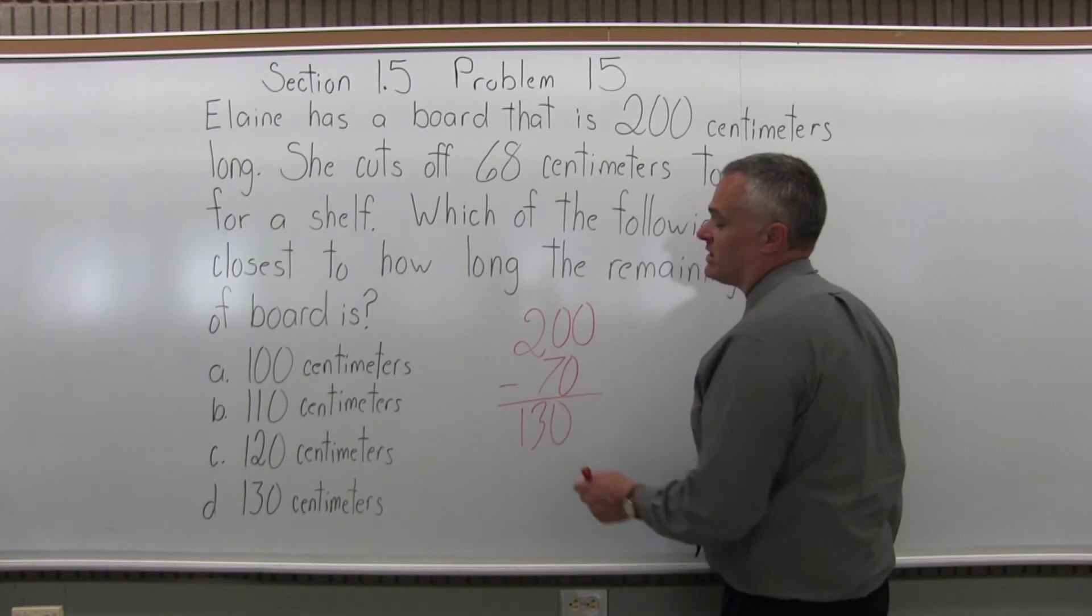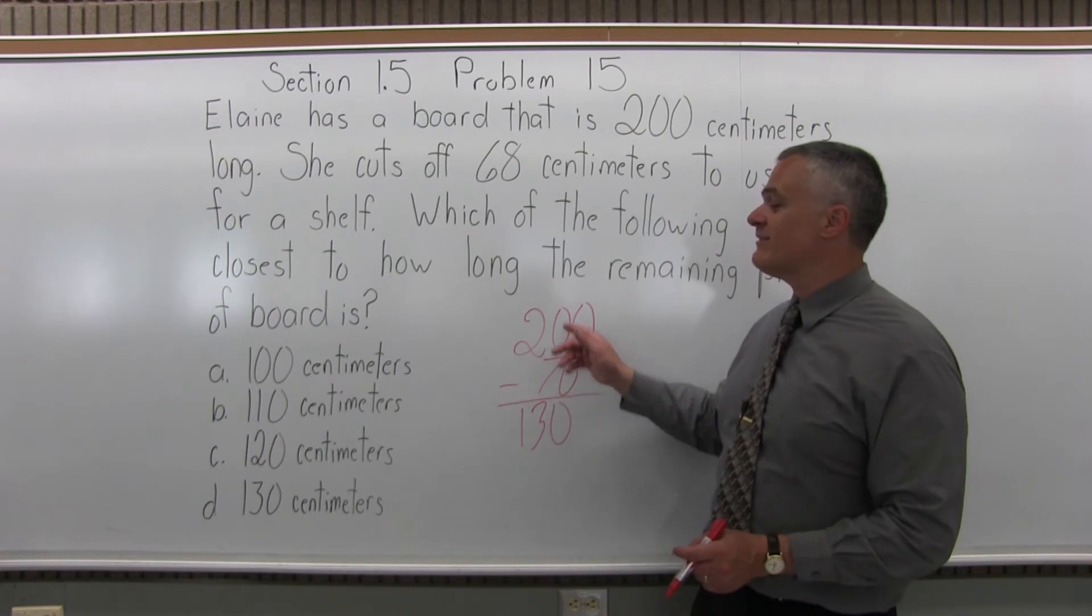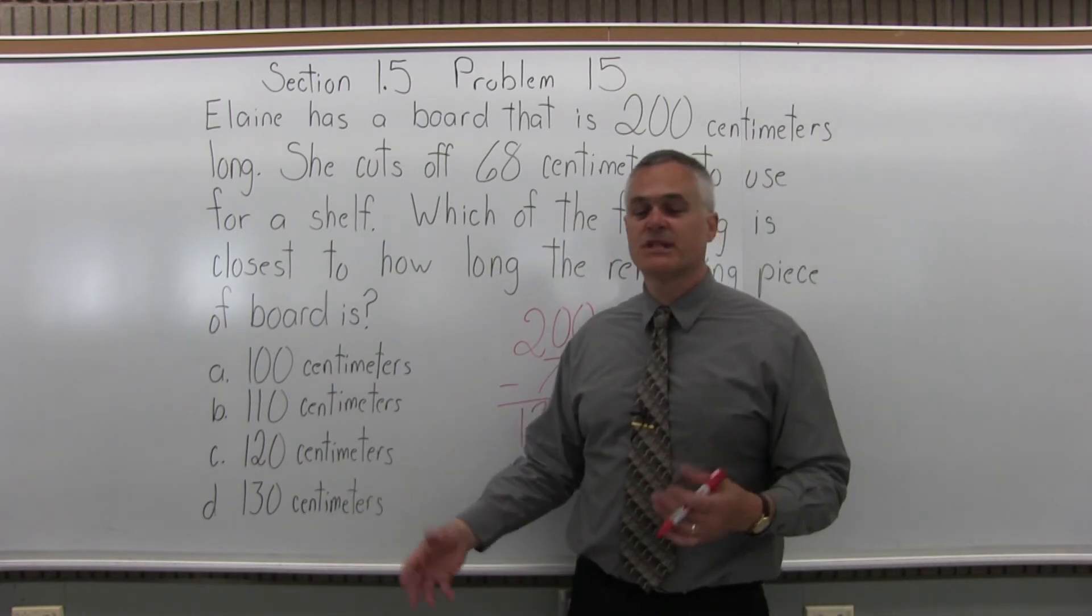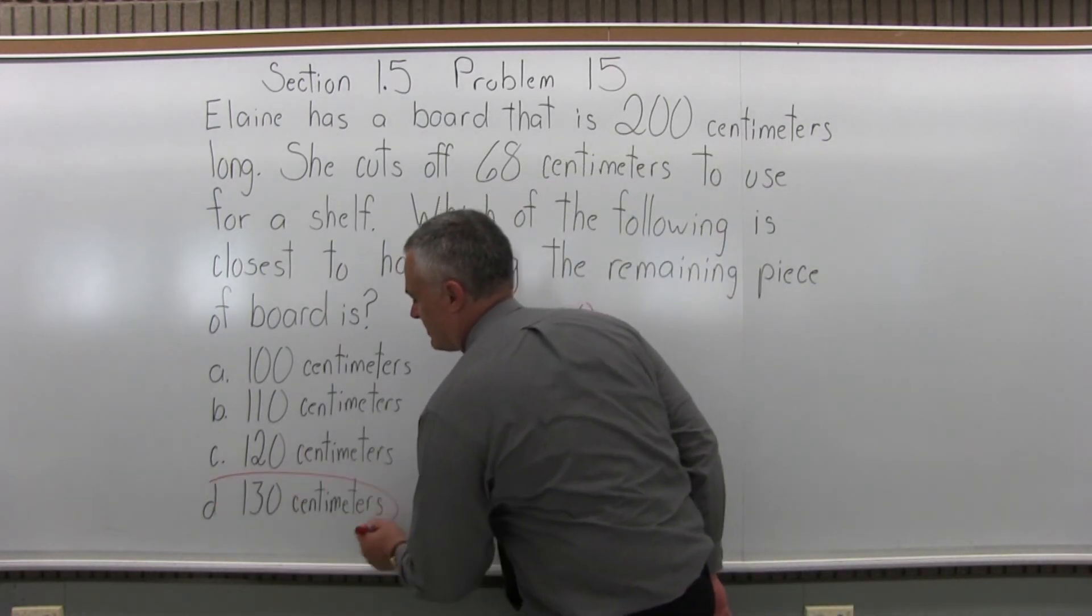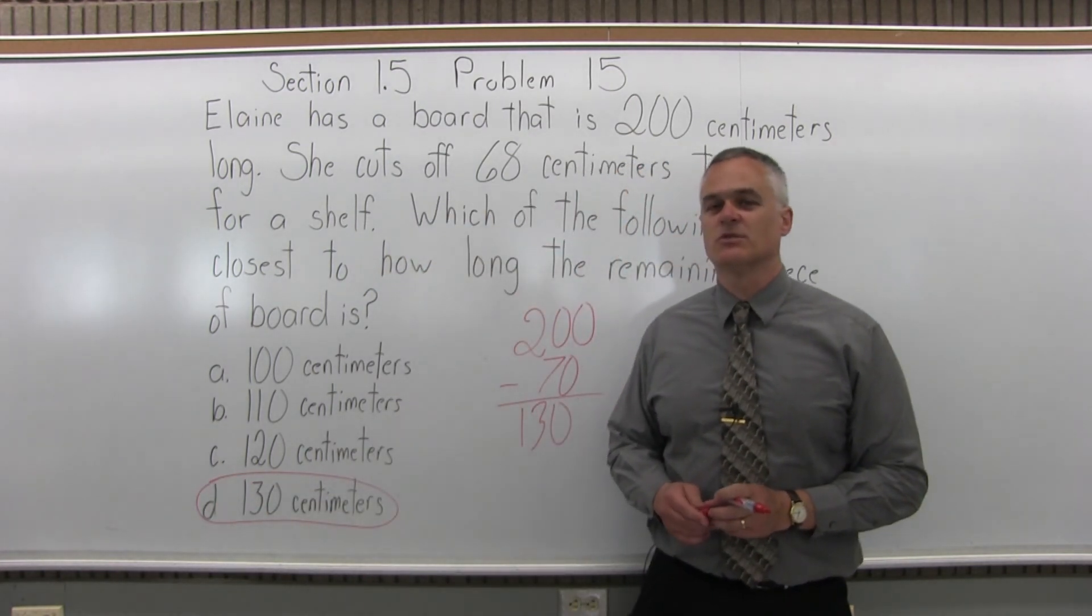you're left with approximately 130, which is close to D. Now because it wasn't really 70, it was 68, it's going to be pretty close to that. That's not an exact answer. It's an estimate. But the answer is Option D. It's close to 130 centimeters, what's left.